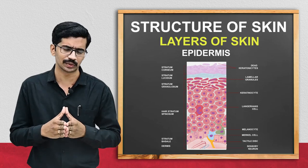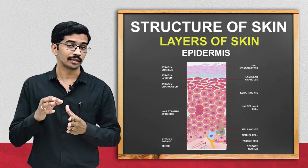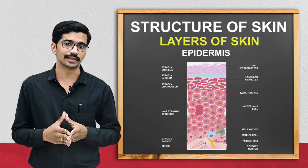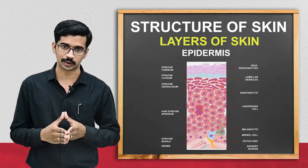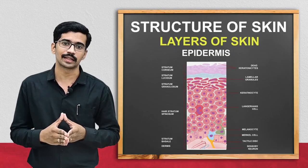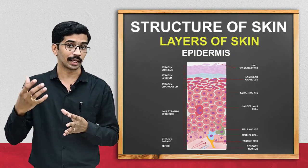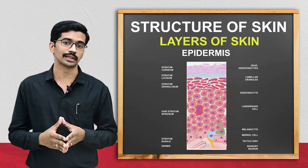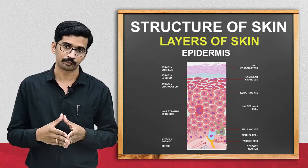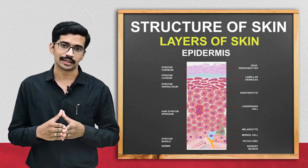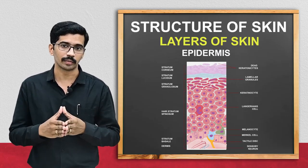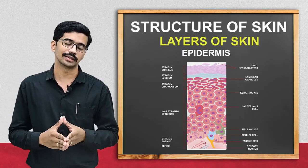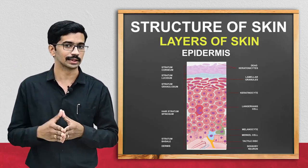Just below the stratum lucidum there is another layer with granule-like structures, which is why we term it the stratum granulosum. Just below that is the stratum spinosum, where cells appear spine-like. And just below that, cuboidal or columnar epithelial cells are present over the basement membrane — that is termed the stratum basale.